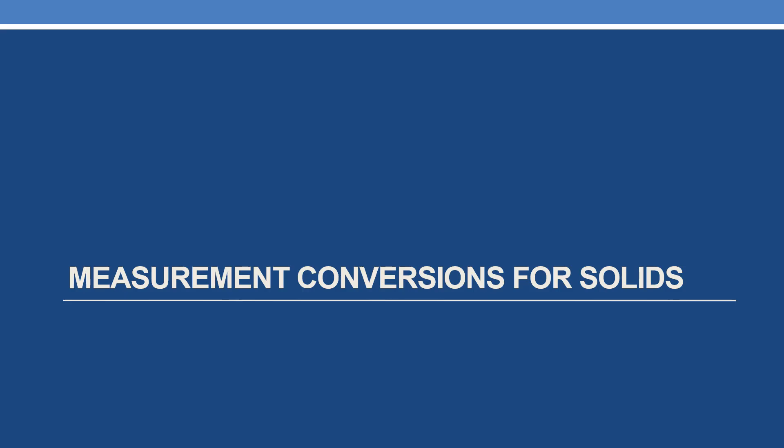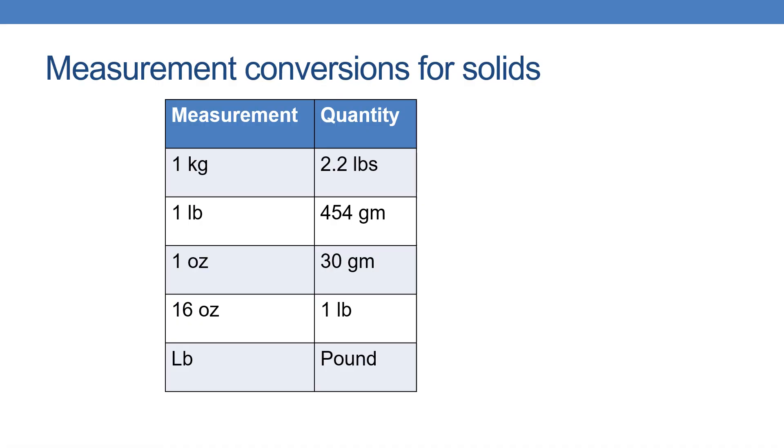Now coming to measurement conversions for solids. 1 kg is equal to 2.2 pounds. LB means pounds, and 1 pound is equal to 454 grams.